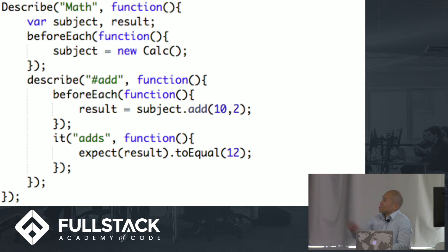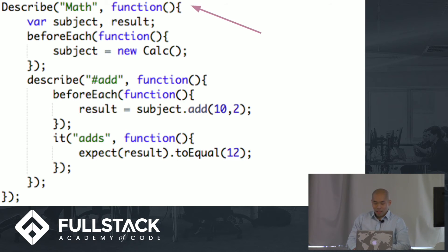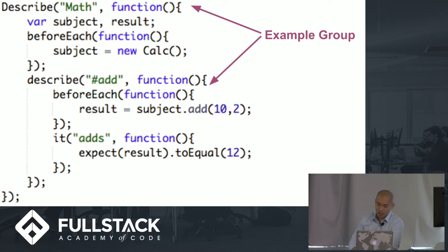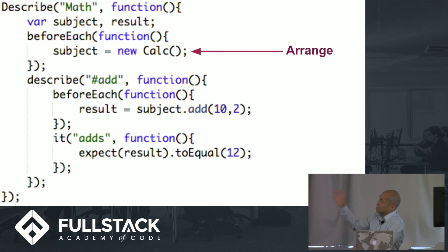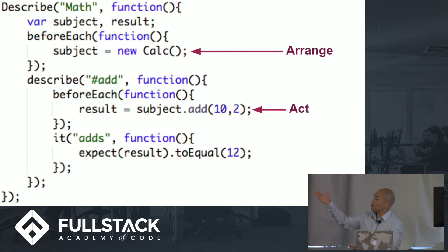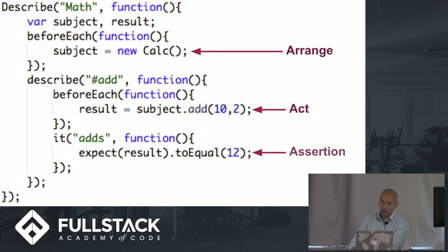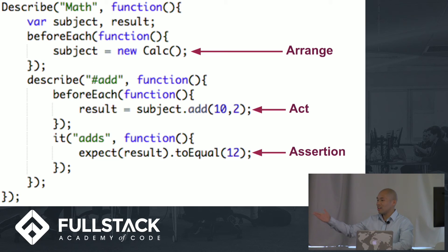Don't be scared — this is actually really simple Jasmine code I wrote to test a calculator function. Whenever you see a nested describe block, this is called an example group. Inside, we have the arrange phase: we set up the environment by creating a new calculator. Then we act: we invoke the add method on the calculator and assign the result to a variable called result. And lastly, we assert: we make sure the result is indeed 12. If we're doing TDD, the next step would be to write the test for subtraction, then write the subtraction method.